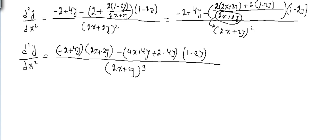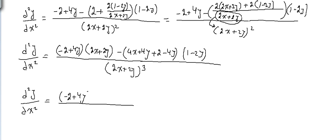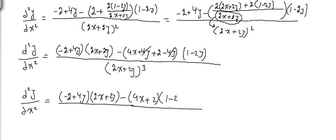Again, we can simplify: d²y/dx² equals (minus 2 + 4y)(2x + 2y) minus (4x + 4y)(1 - 2y), noting that the 4y terms cancel, over (2x + 2y) cubed.